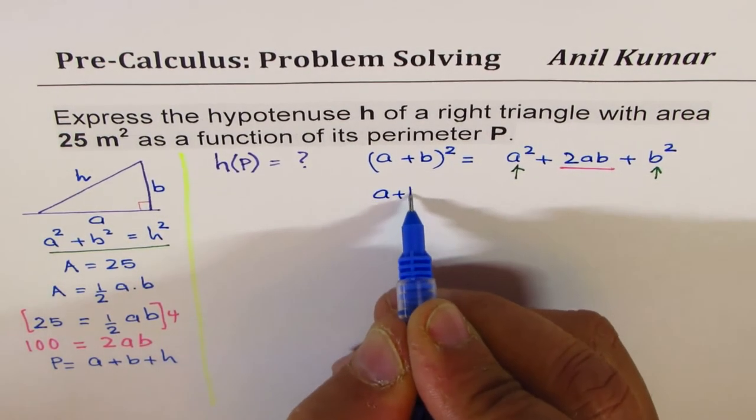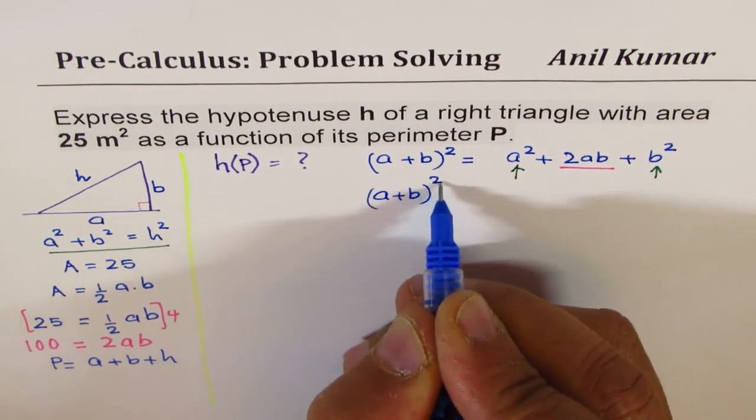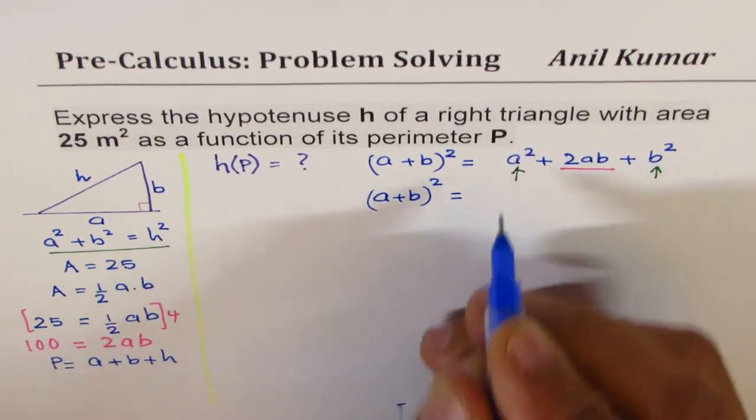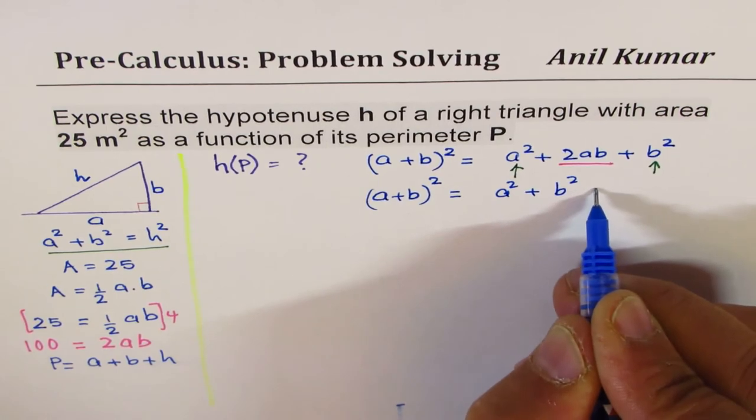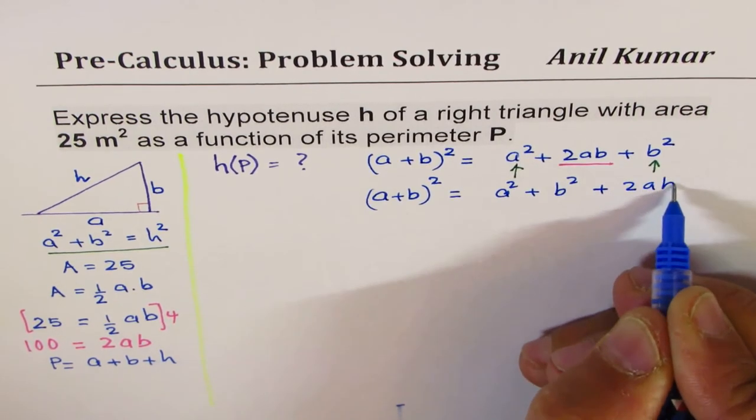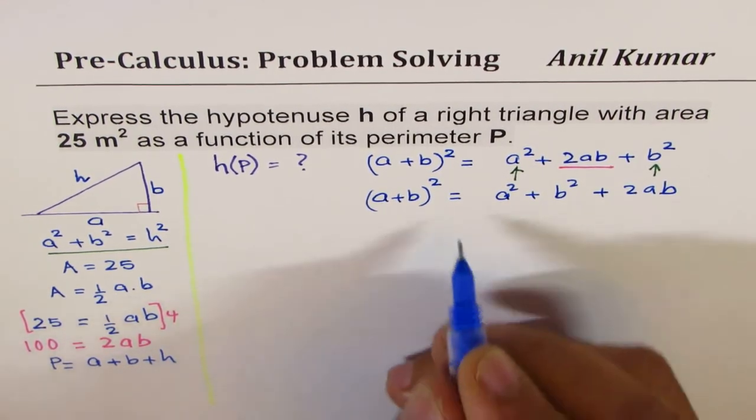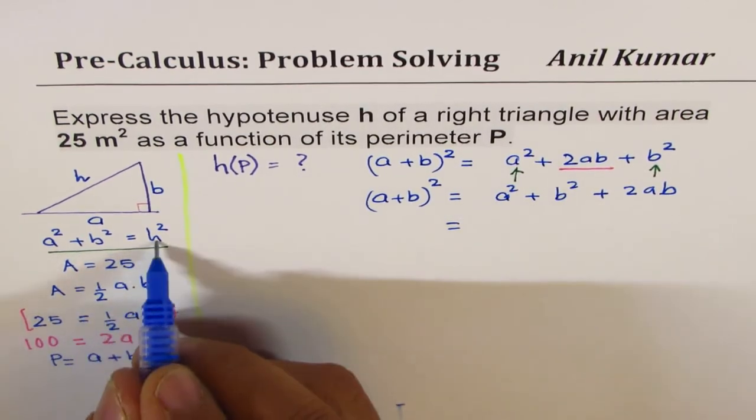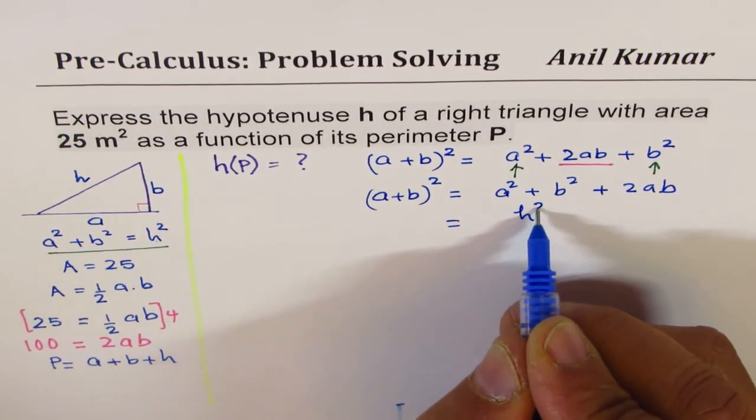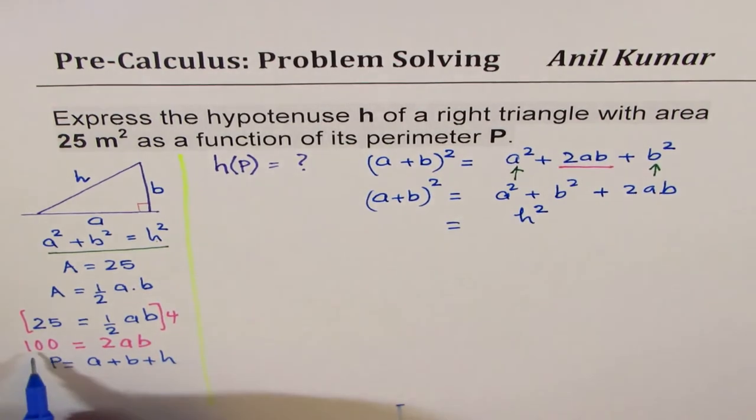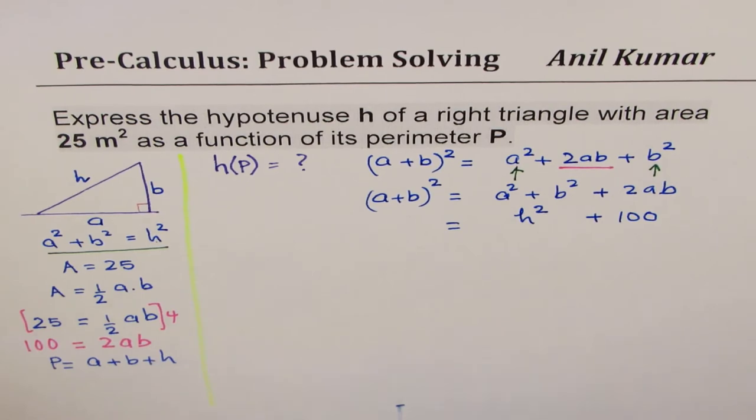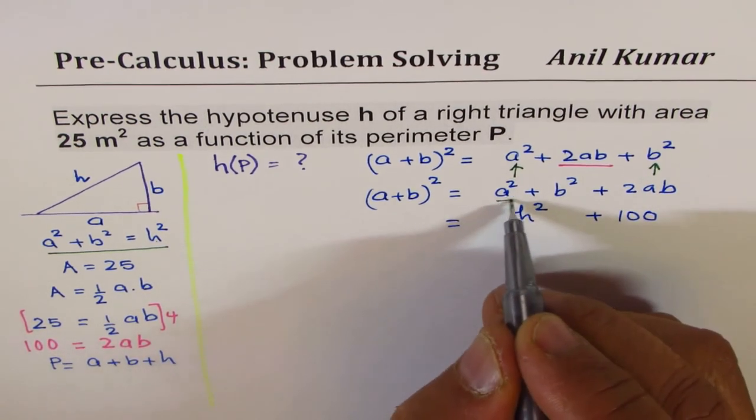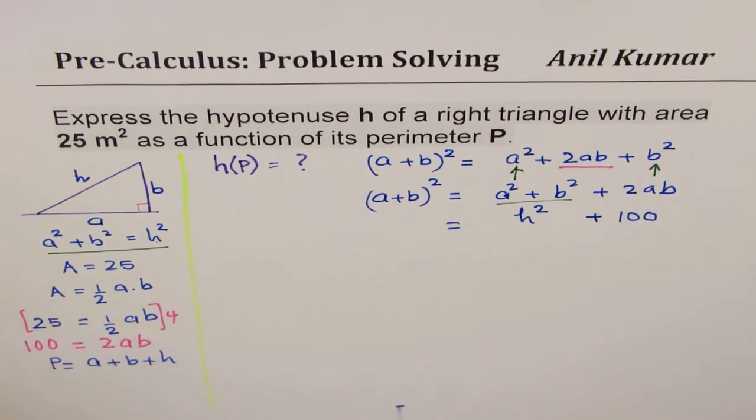So we have a plus b whole square equals to, let me rewrite. So I'll rewrite this as a square plus b square plus 2ab. And then I'll make the substitution. a square plus b square is h square, and 2ab is 100. So we did a square plus b square as h square, and 2ab as 100.